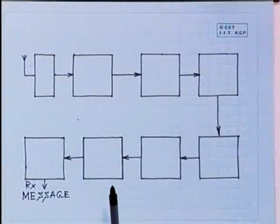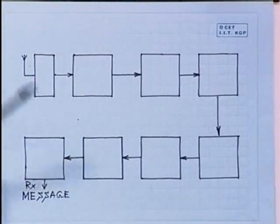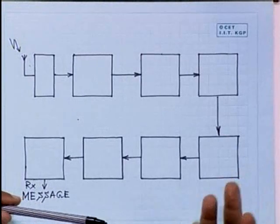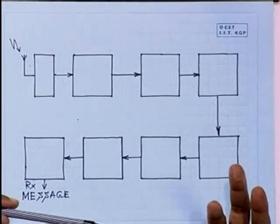Now let us discuss the receiver block diagram. We have discussed the transmitter; let us see the corresponding block diagram for the receiver section. The signal expected at the input to the receiving antenna is RF, low power, analog, and narrow bandpass in nature.